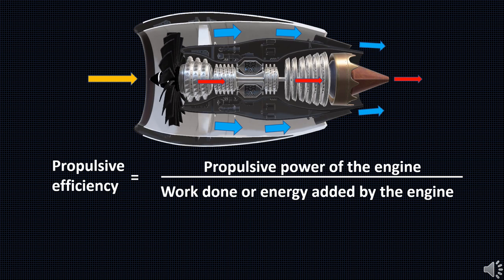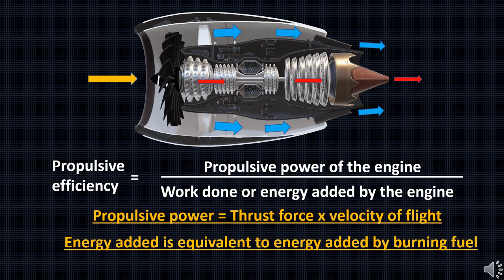The propulsive efficiency is a key parameter. It is the ratio of propulsive power of the engine to the work done or energy added to the air by the engine. It is the indication for producing thrust how much energy is added or work is done by the engine.